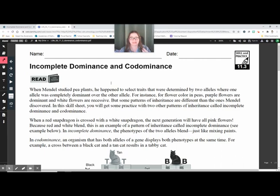Incomplete Dominance and Codominance. So when Mendel studied pea plants, he happened to select traits that were determined by two alleles where one allele was completely dominant over the other. For instance, for flower color in peas, purple flowers are dominant and white flowers are recessive. We've said this a million times at this point, right?